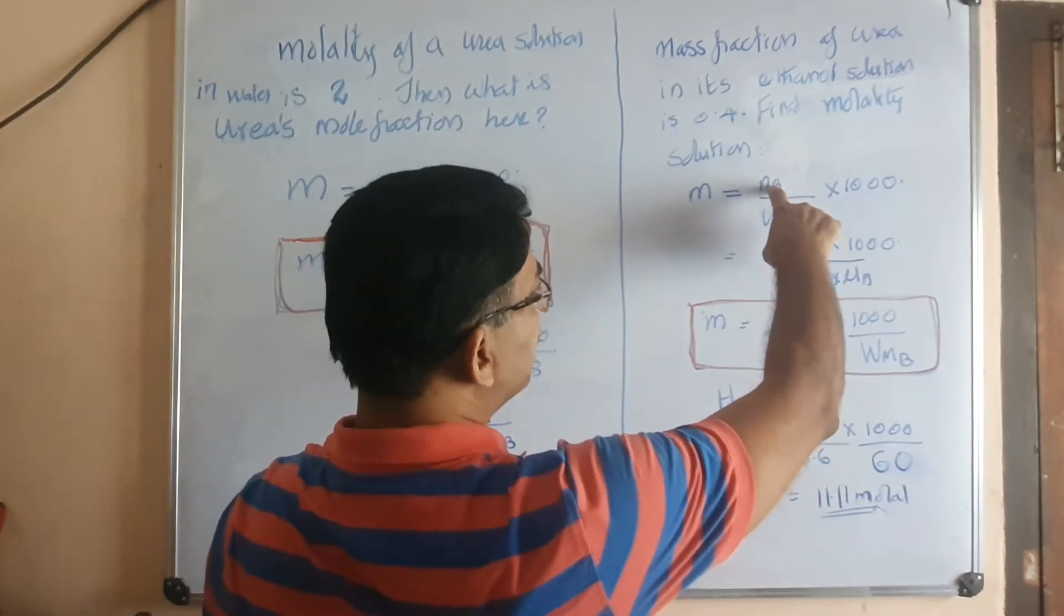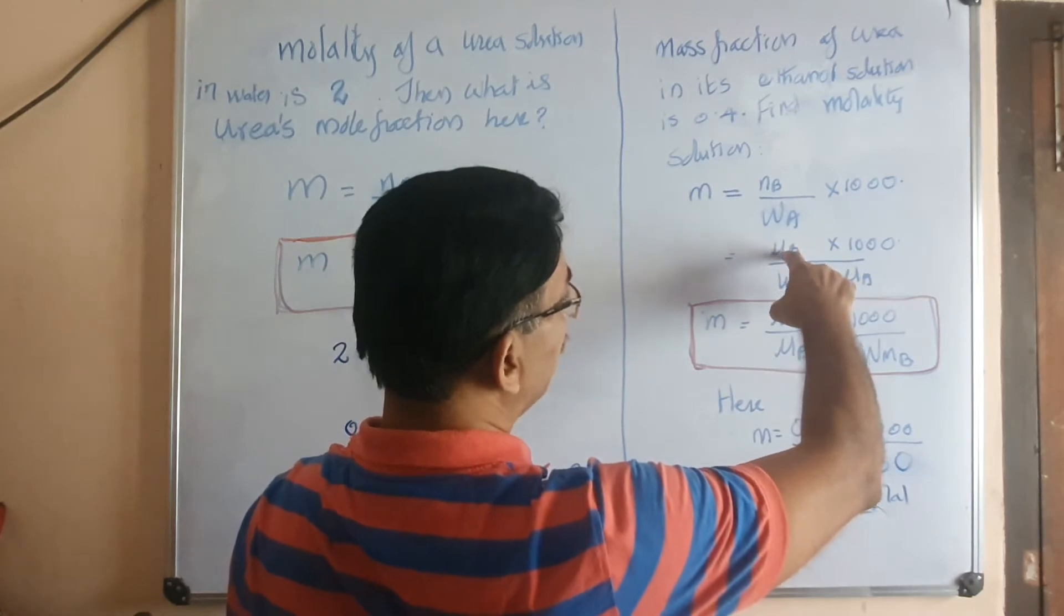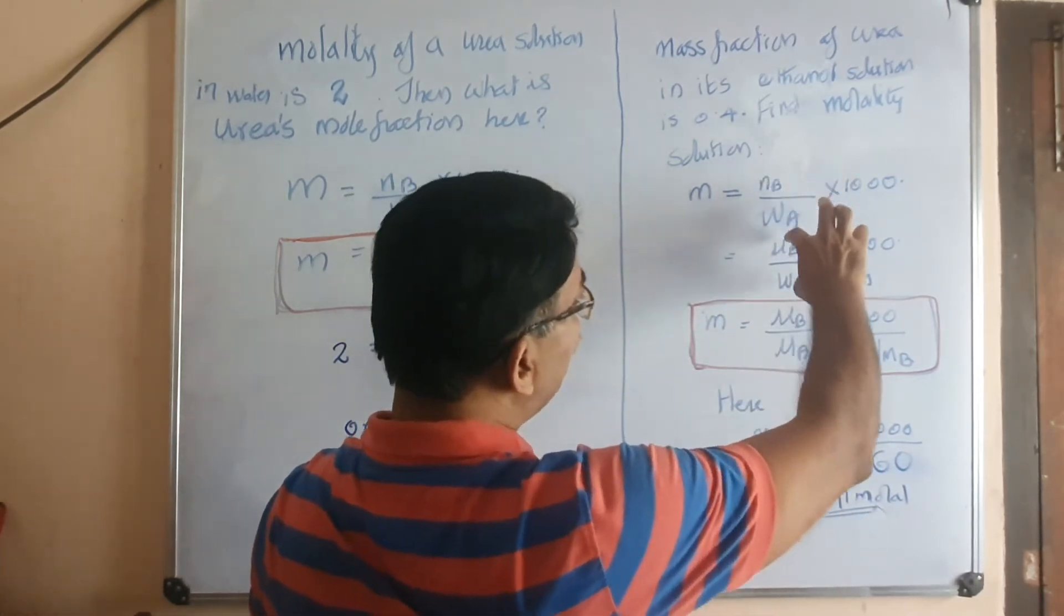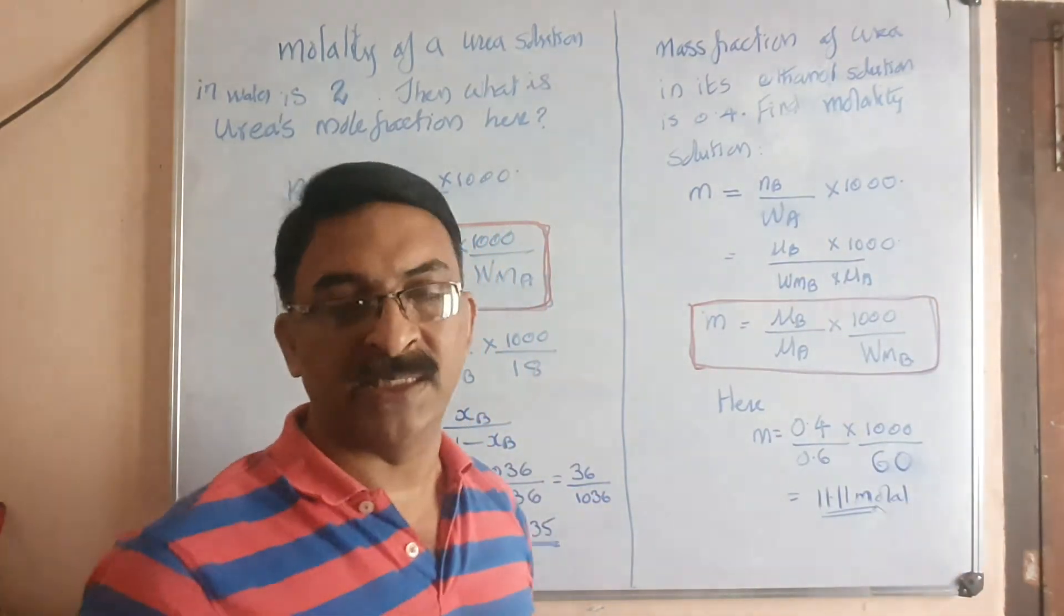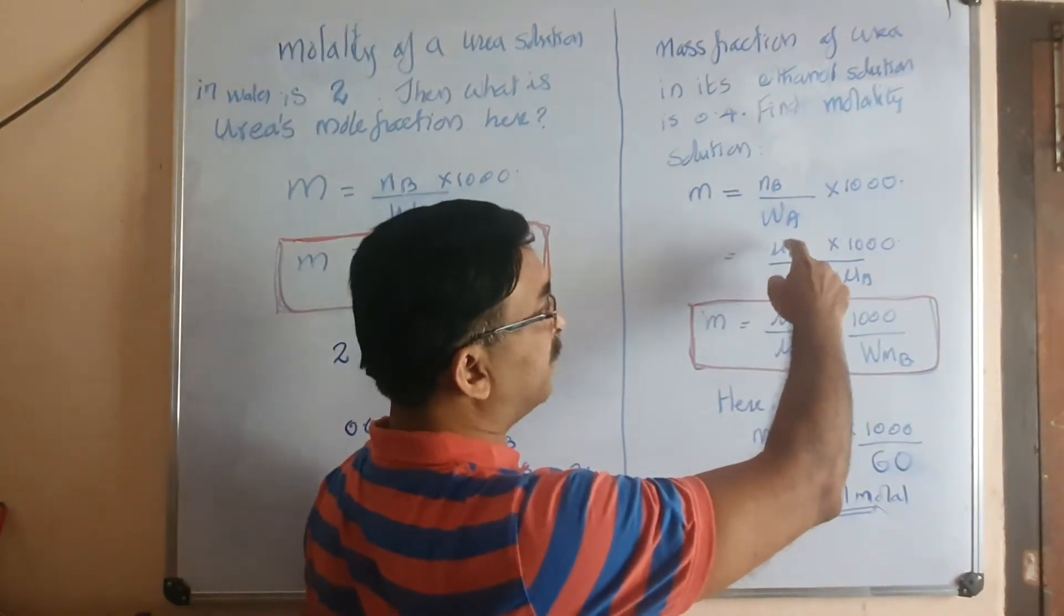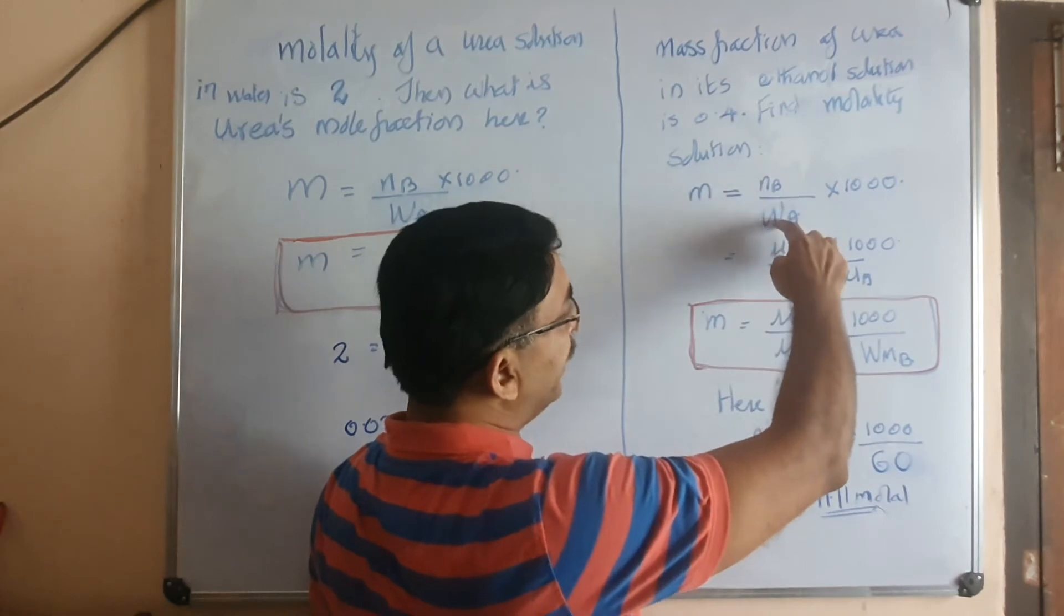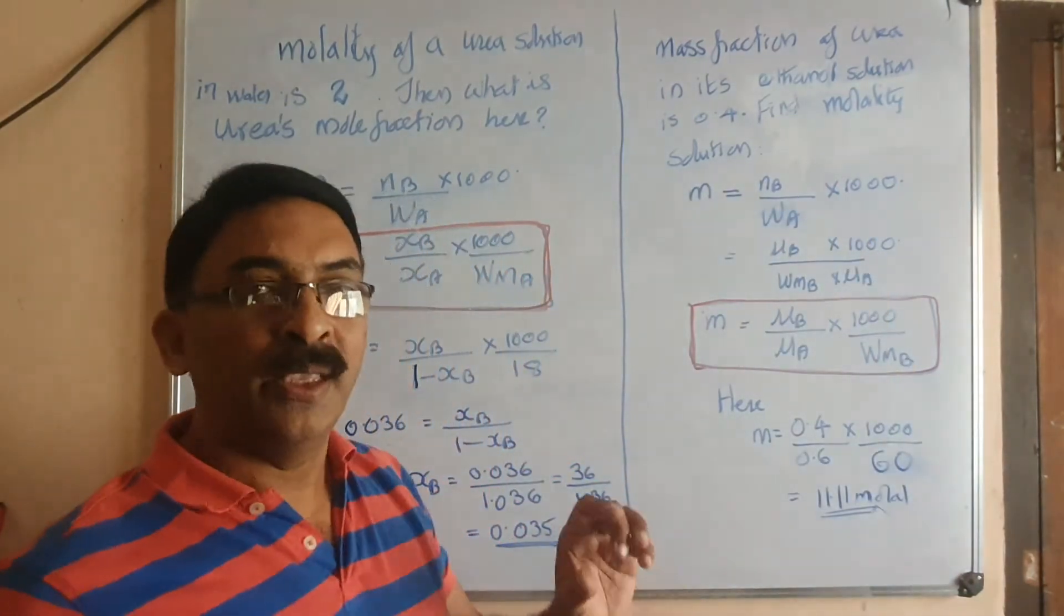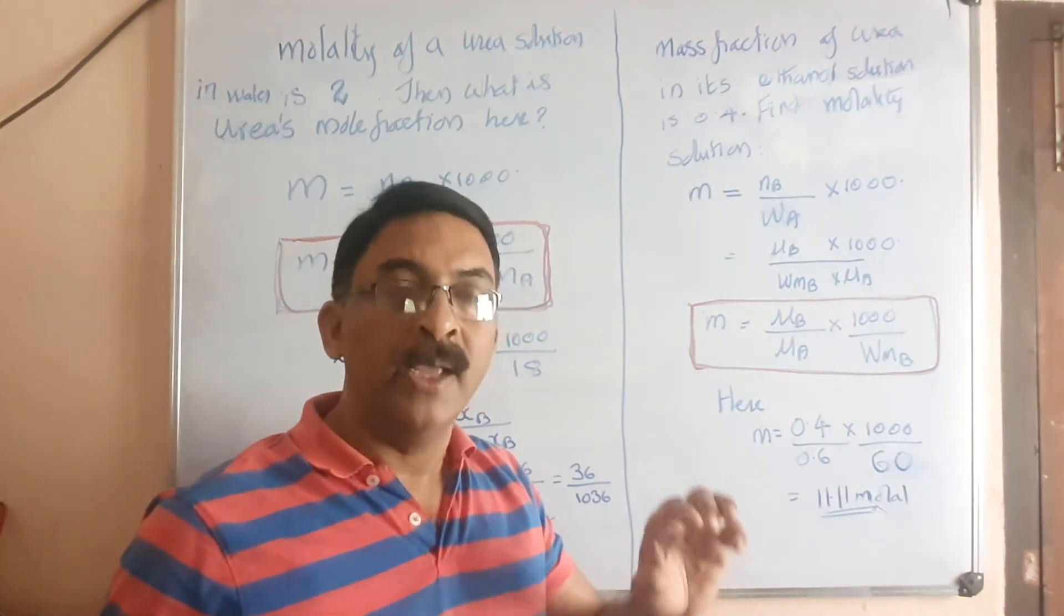Here, instead of nb we can use μb. μb is mass fraction by molecular mass, so nb can be replaced by μb by wmb. Mass by molecular mass, any mass can be taken, so we take mass fraction itself as the mass. μb by wmb stands for nb, and in the place of wa you can directly use μa.